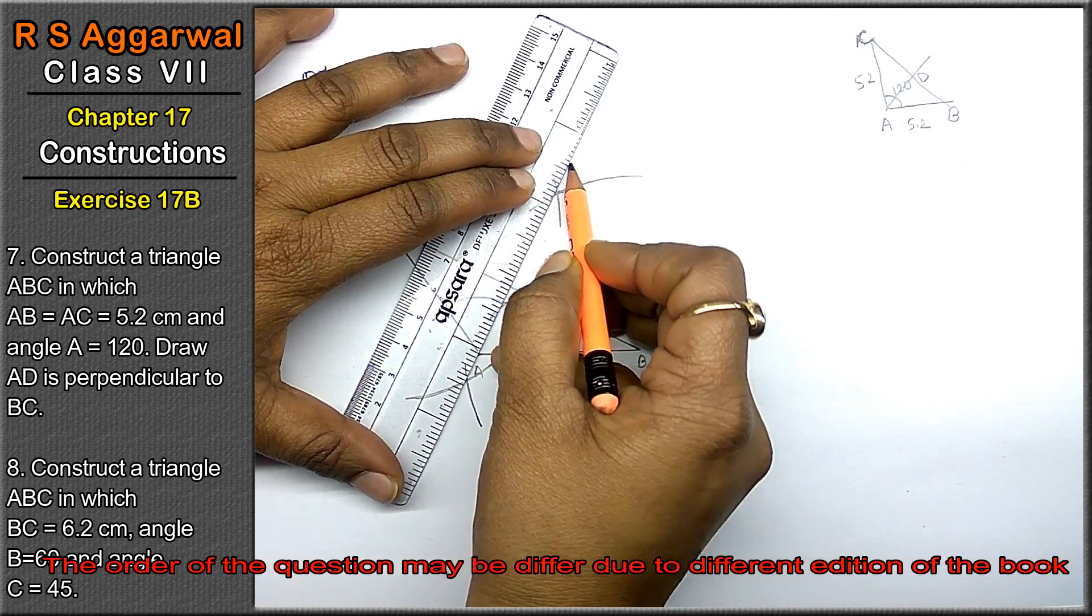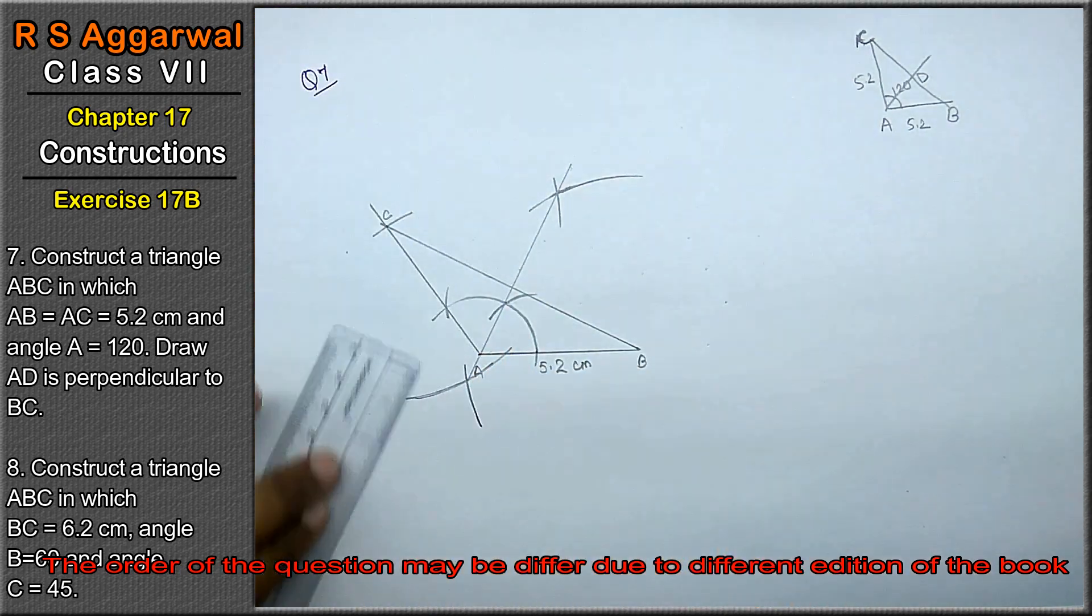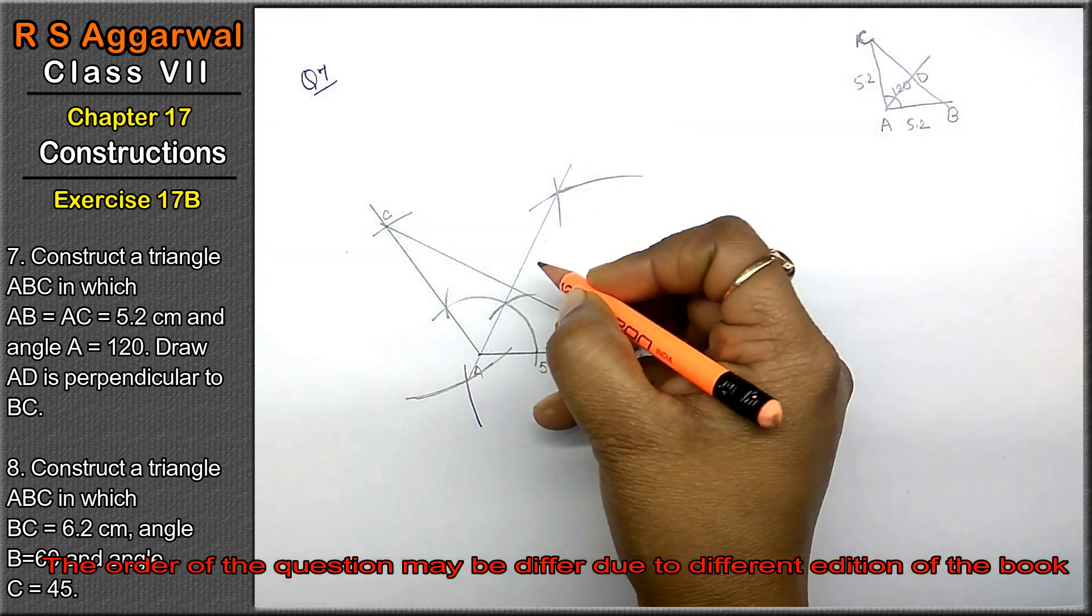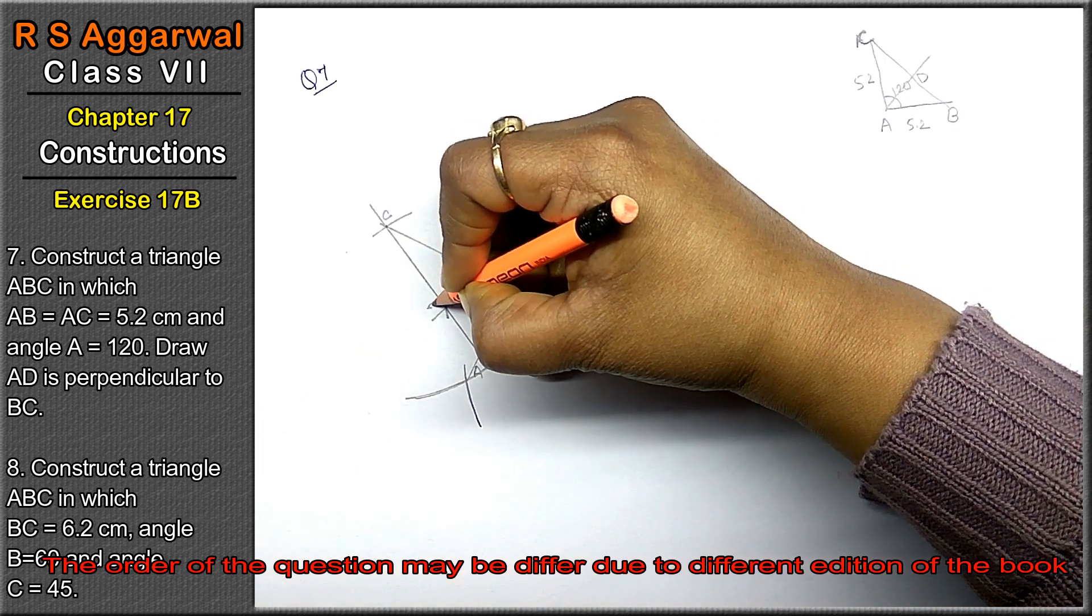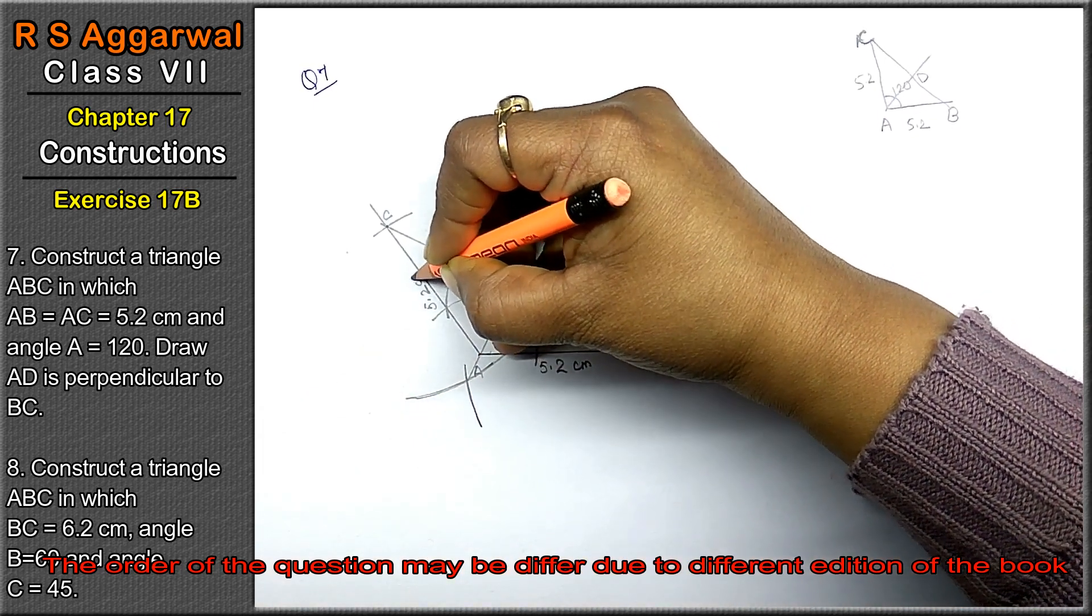Now we will join this. It comes to A. This is our point D and we will write here 5.2 cm.